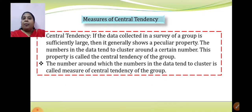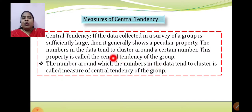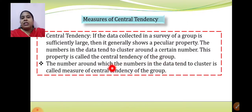The number around which the numbers in the data tend to cluster — 'tend to cluster' means they will be nearly, approximately the same as that particular number; not exactly same, but approximately same. Those numbers will tend to cluster around a certain number, and that is nothing but the measure of central tendency of the group.